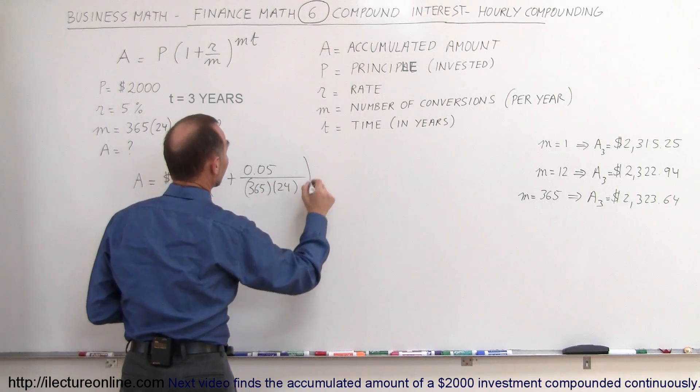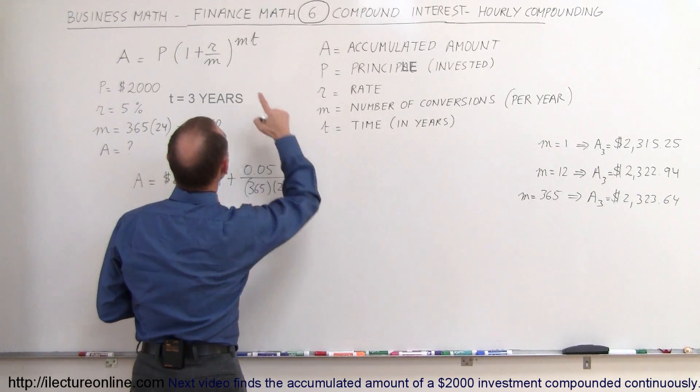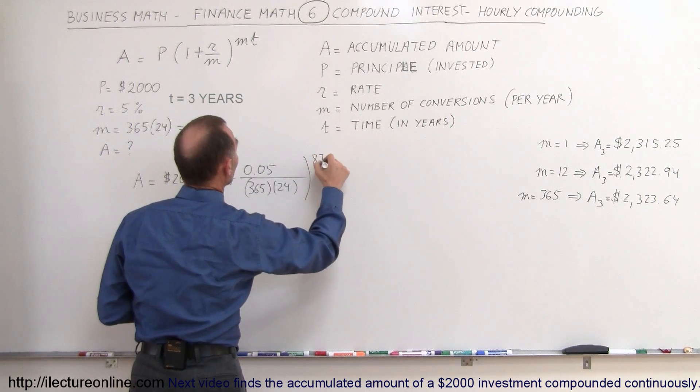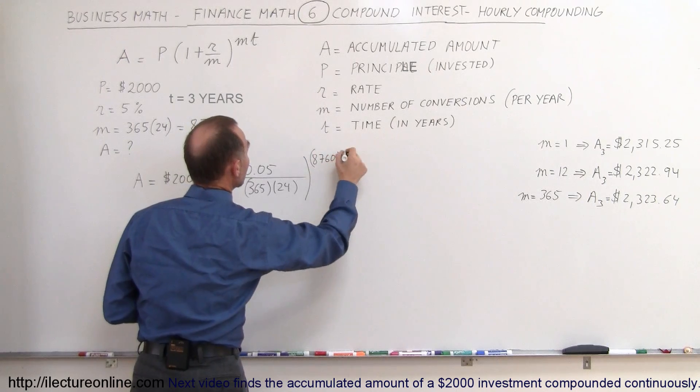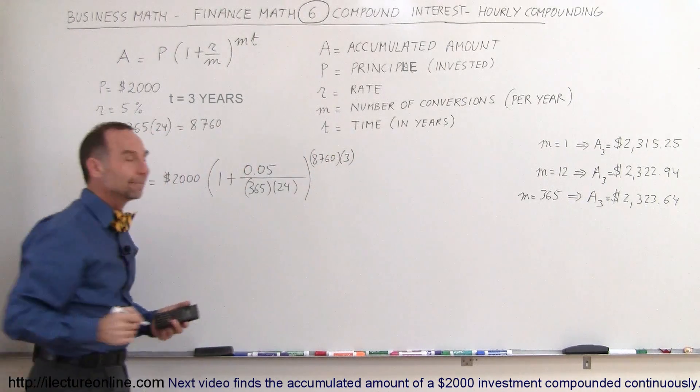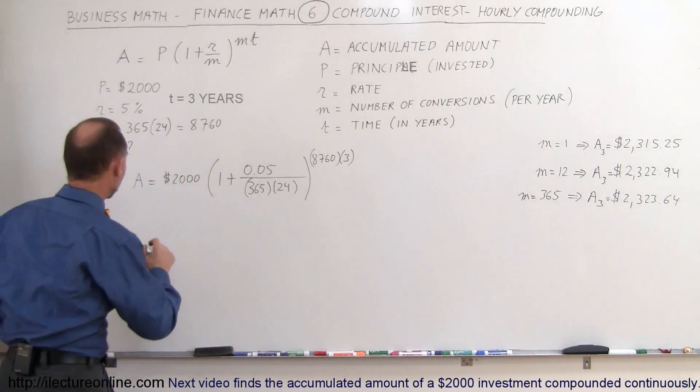Therefore, we have to raise this to the M·T power, which is 8,760 times T for three years. Let's go ahead and work that out.